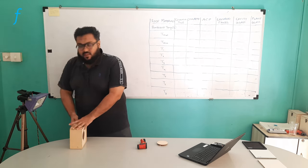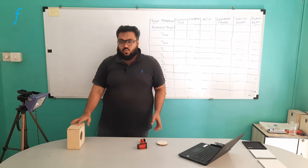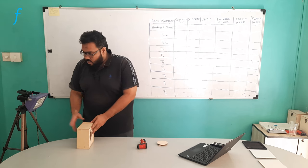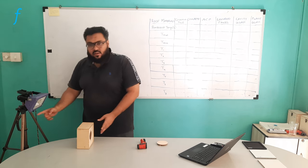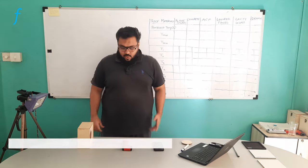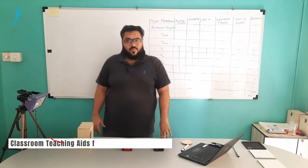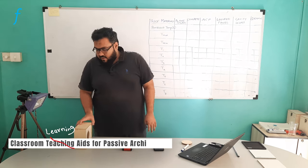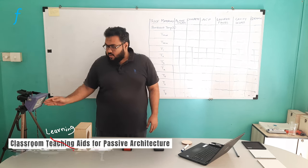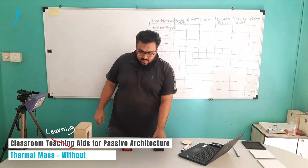In other experiments we have kept the boxes horizontal. In this one, we have to keep it vertical in line of the heat that is being passed. We are looking at the procedure of this thermal mass experiment. I have placed the box vertically in front of the heat source.